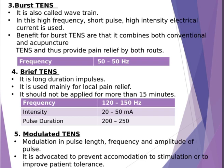Brief TENS: it is a long duration impulse, used mainly for local pain relief. It should not be applied for more than 15 minutes. Modulated TENS involves modulation in pulse length, frequency and amplitude of pulse. It is advocated to prevent accommodation to stimulation or to improve the patient's tolerance.